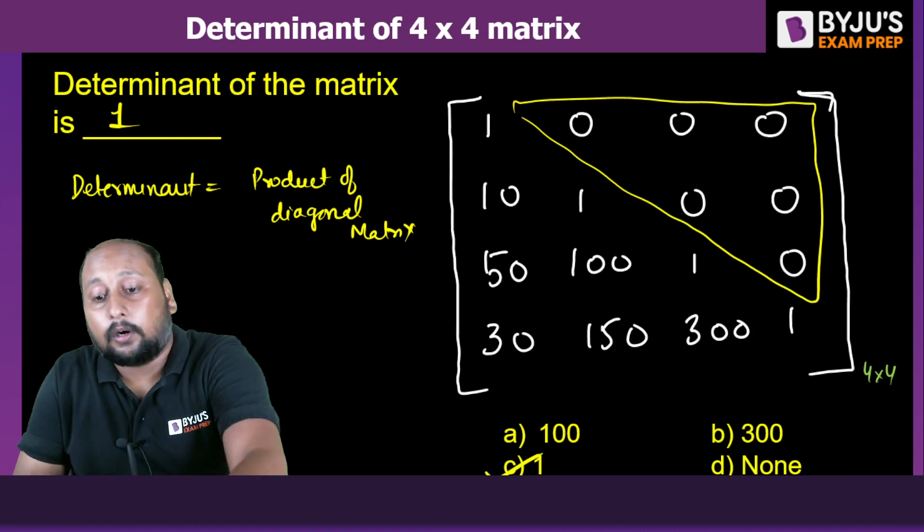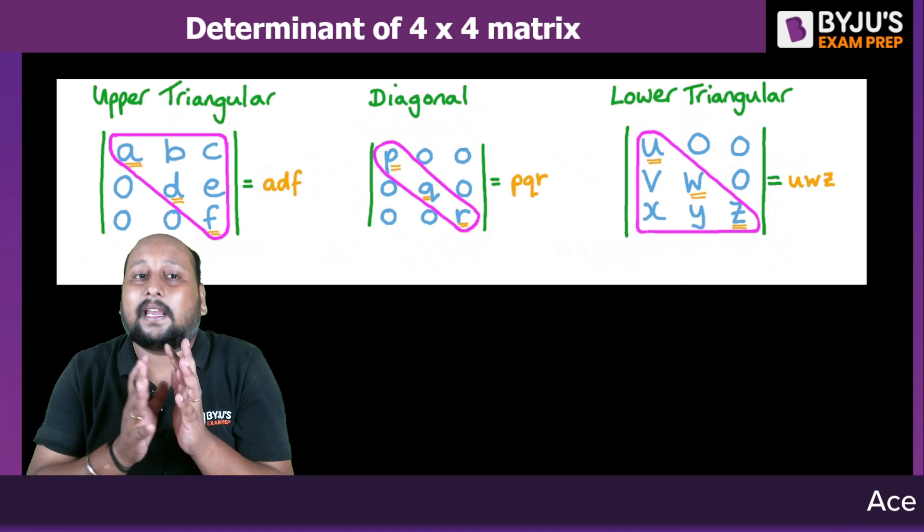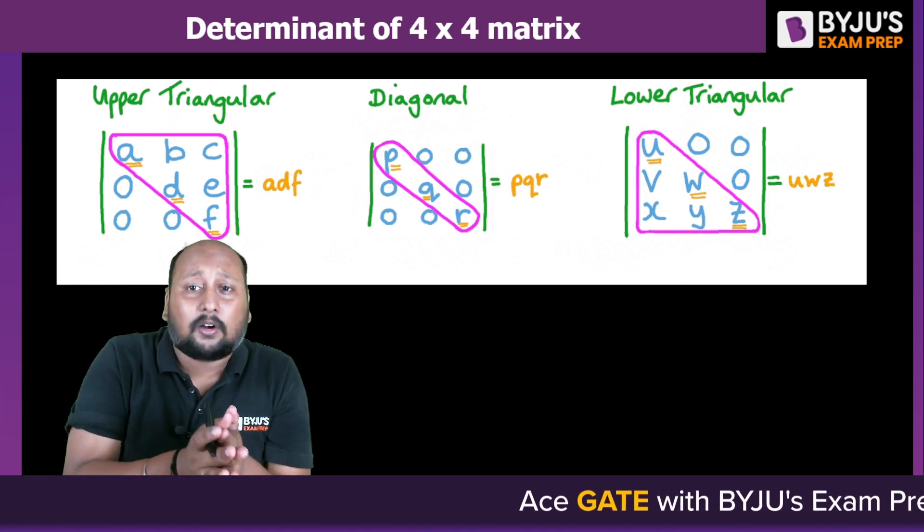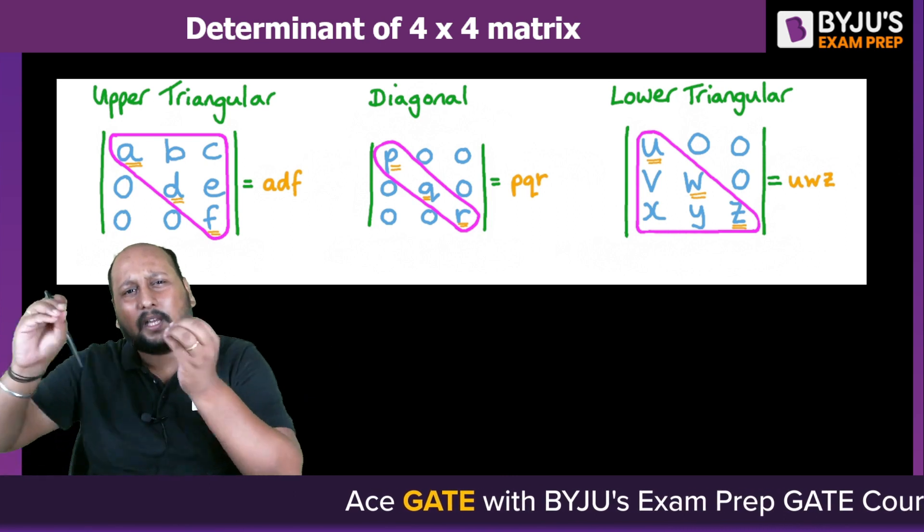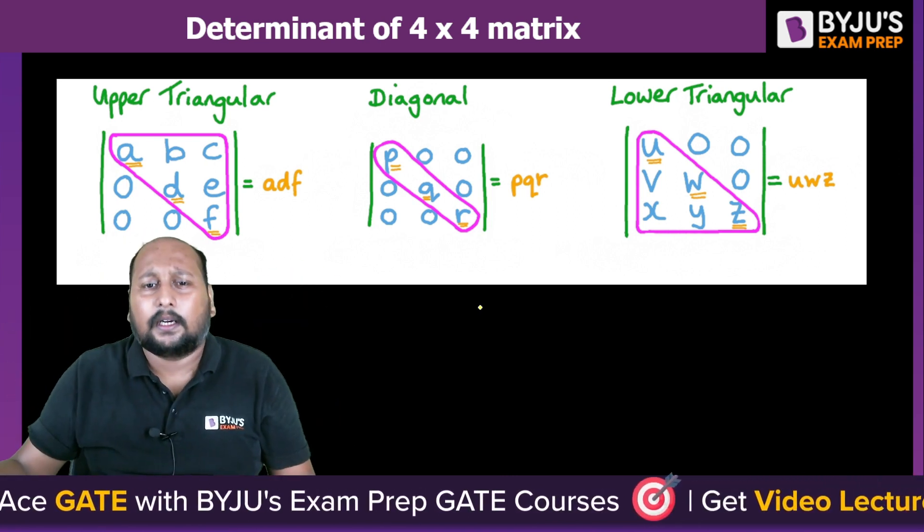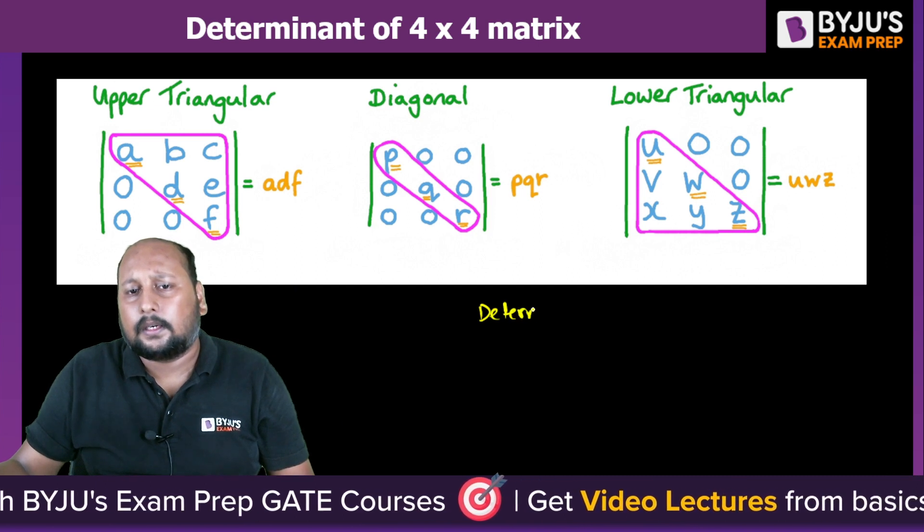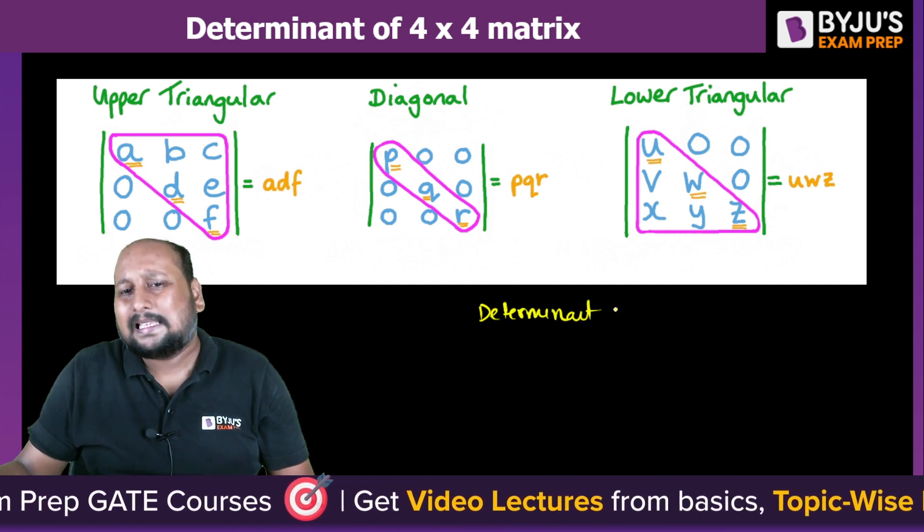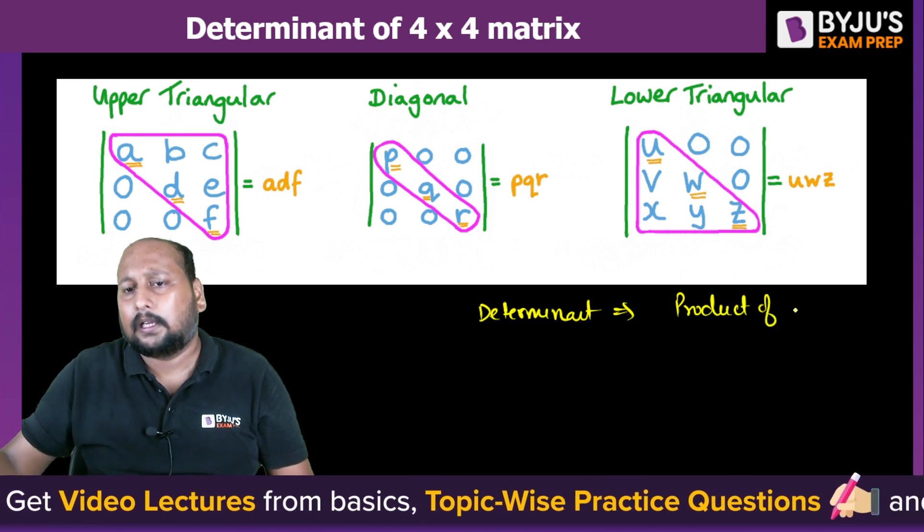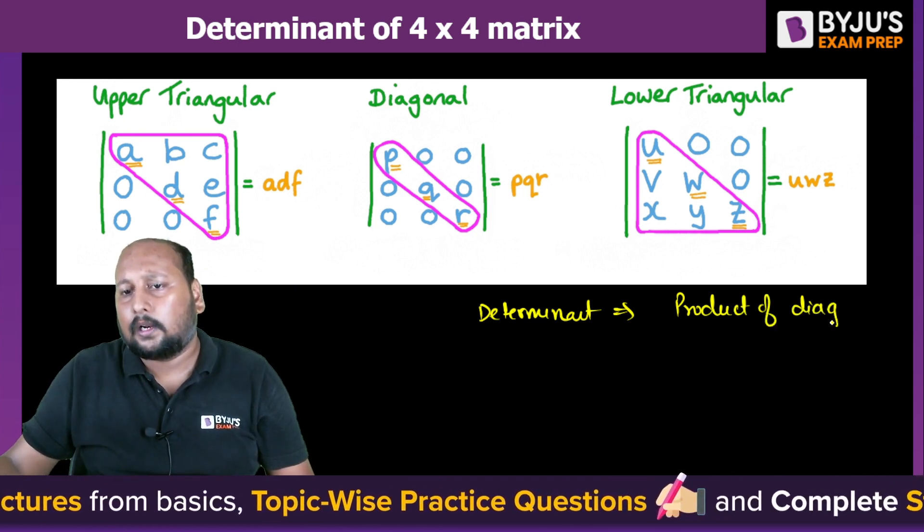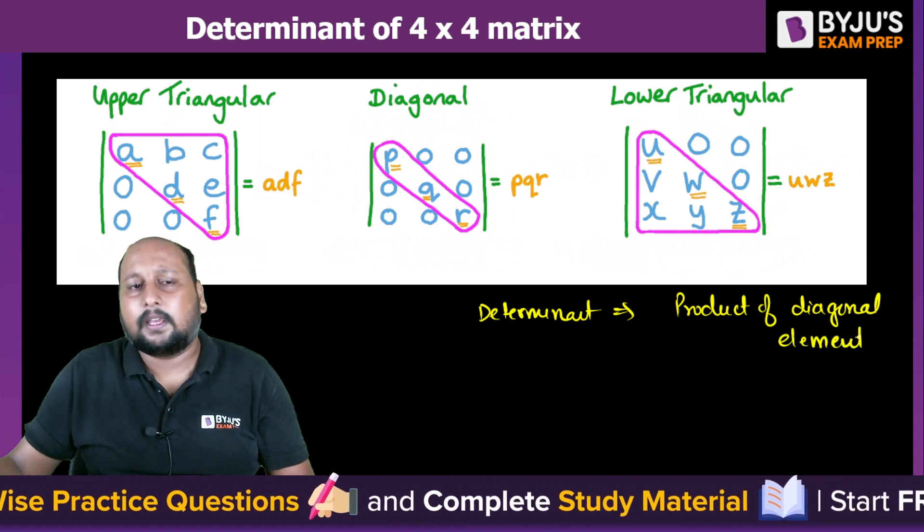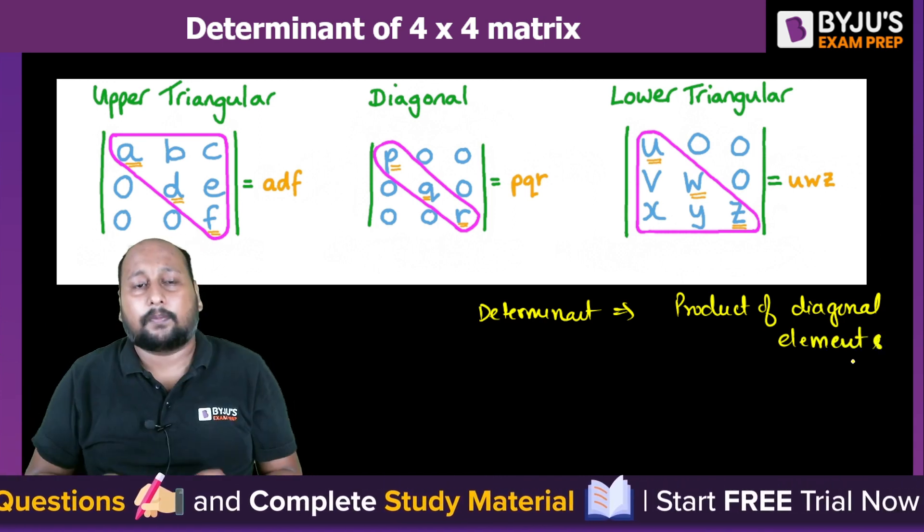The question is, is this only applicable to lower triangular? It is applicable to all three categories: we can have an upper triangular matrix, we can have a diagonal matrix of any size, 3 × 3, 4 × 4. Whenever you're having this kind of situation, the determinant will be simply equal to the product of diagonal elements.